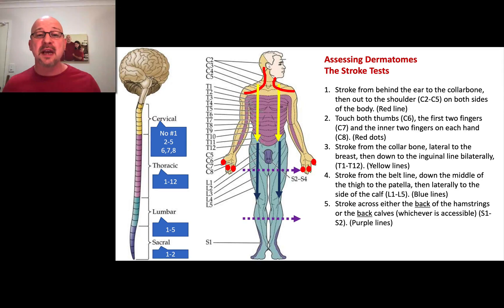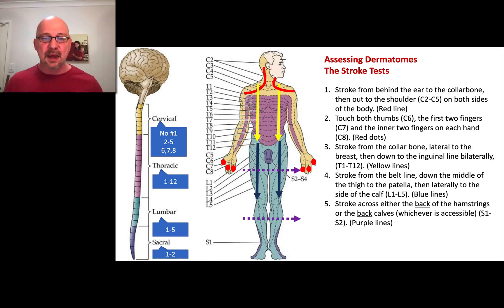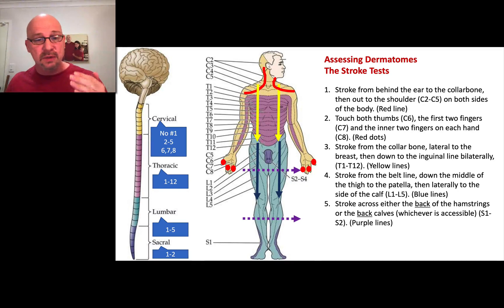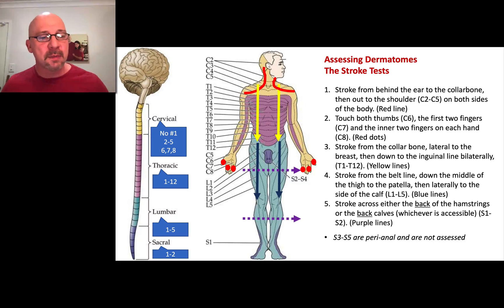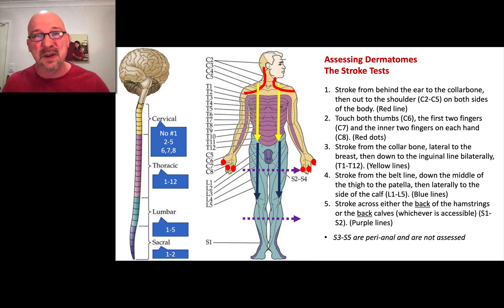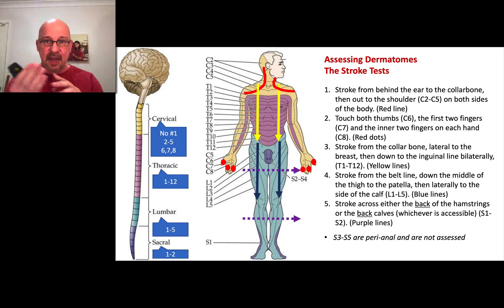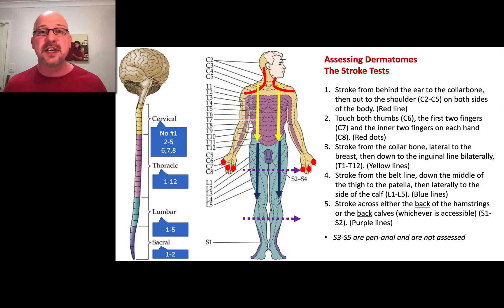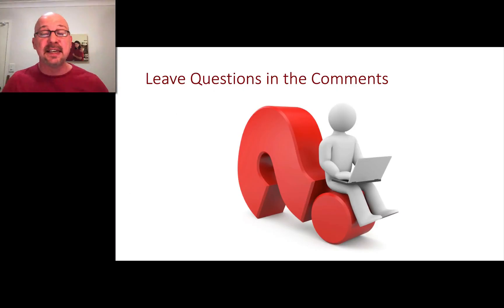Sacral is easy — stroke across the back of the upper leg, the hamstrings, or the back of the calves. If they're on the stretcher, have them bend their knees a little and lift up. S3 to S5 are perianal, and we don't test those — that's done in hospital later. It's not terribly diagnostic, and it's a significant violation of the patient, so we leave those alone. And that's it — four simple stroke tests, including C6, C7, and C8 touching the fingers. If the patient can feel you, it feels normal, and there's no absence of sensation anywhere, they've passed their dermatome test. Nice and easy.